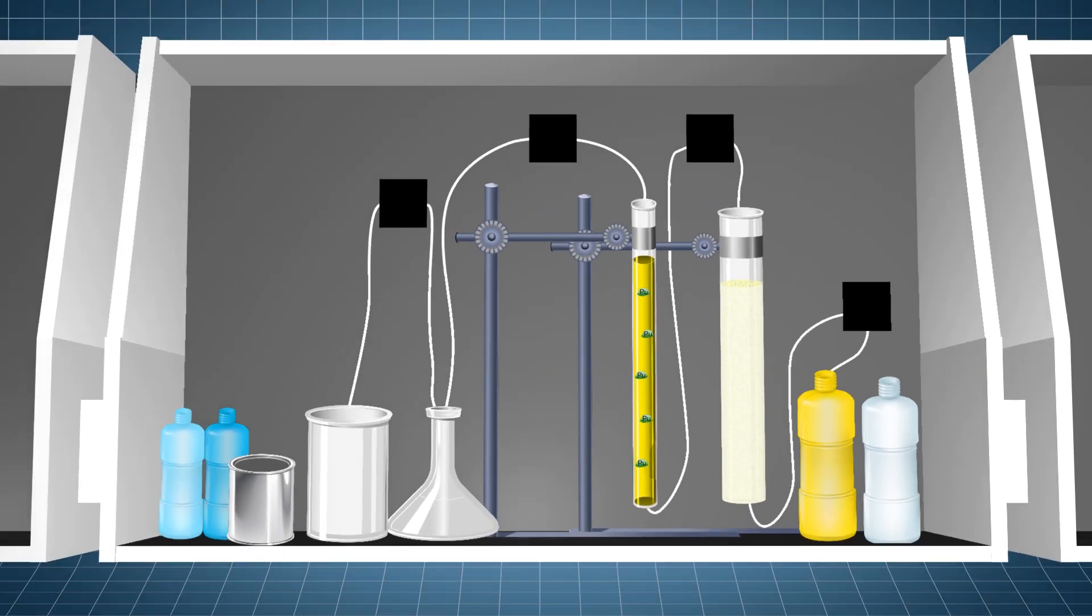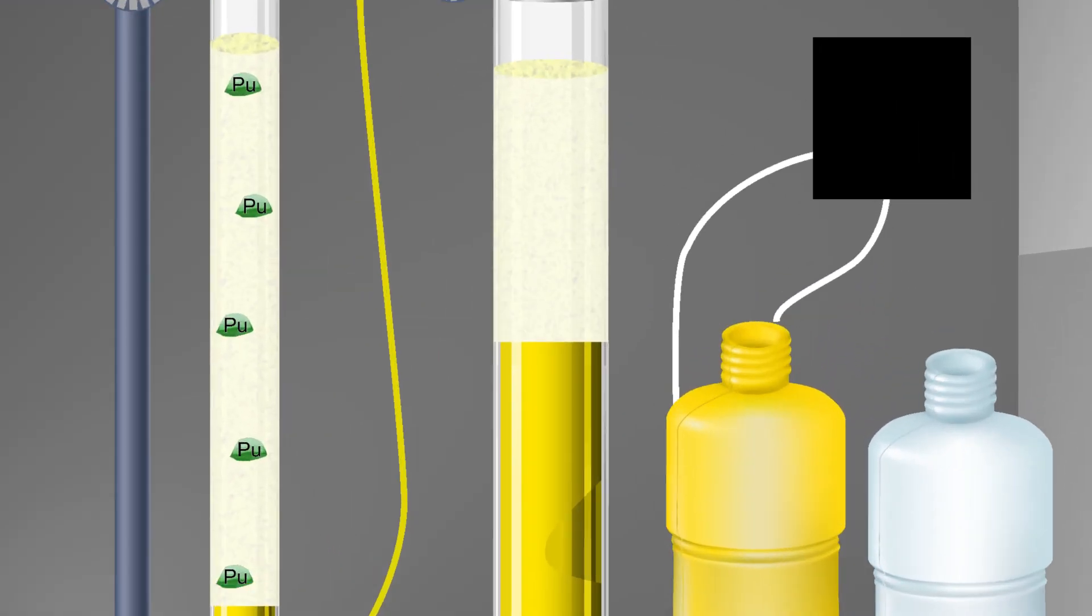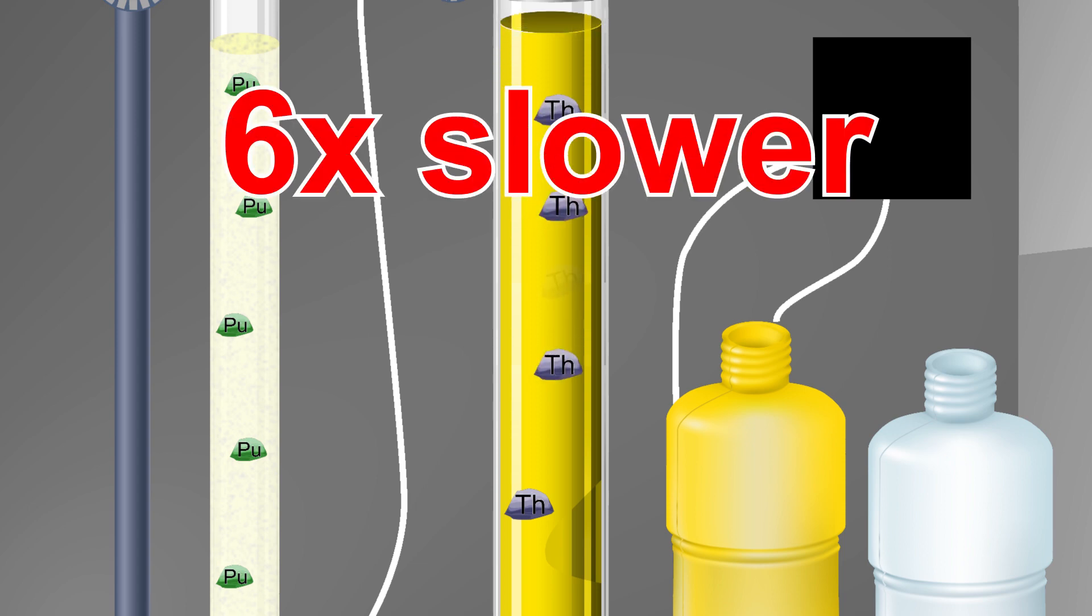This leaves only uranyl nitrate and thorium left in the solution. To get the thorium out of the solution, it's put through another column, conveniently named the thorium column. The same extraction resin is in this column, and it's also attractive to thorium, just not as much though. So the solution is pumped slower through this one, about six times as slow as it was pumped through the previous column.